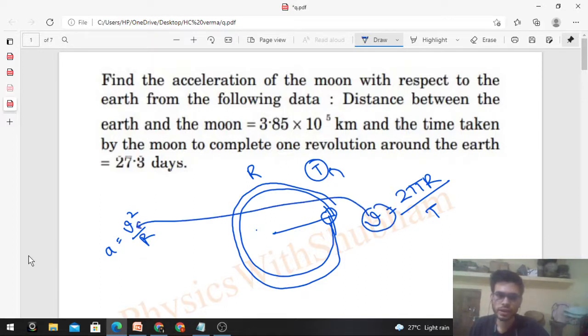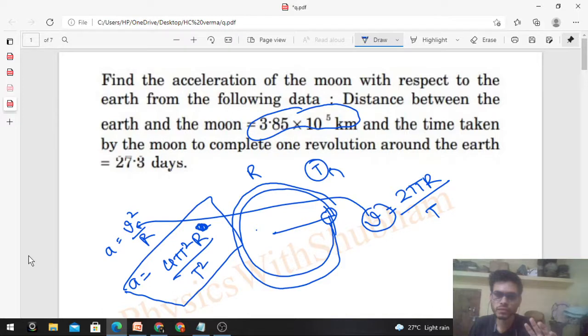If you substitute this value of V here, you will get the value of acceleration as 4π²R² upon T² divided by capital R. Capital R cancels out. The value of capital T is known and capital R is known. Make sure the units are proper—kilometers should be multiplied by 1000, and days should be converted: first multiply by 24 to get hours, then 60 to get minutes, then 60 again to get seconds.